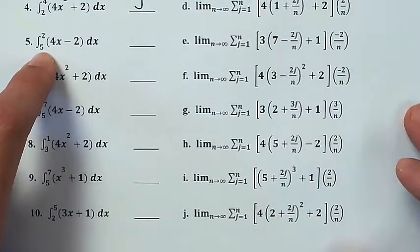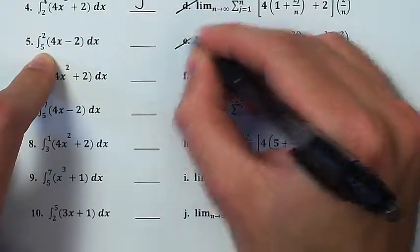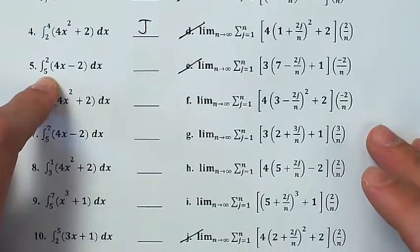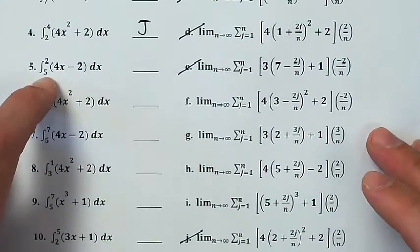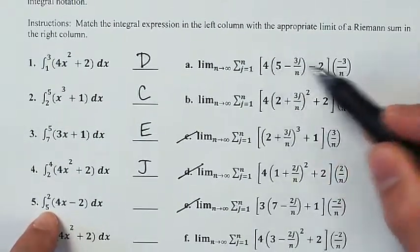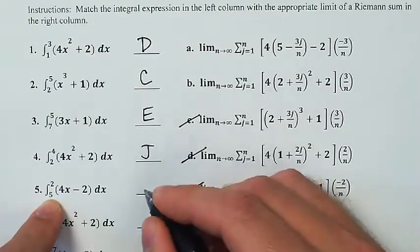Number 5, 4x - 2, and maybe I should have started crossing these off, the ones that I've already used. The integral from 5 back to 2, well, that's a width of negative 3 with a 4x - 2. That shouldn't be too hard to find. Here it is, right here. Width of negative 3, 4x - 2, starting at 5, going back to 2. That's going to be a.